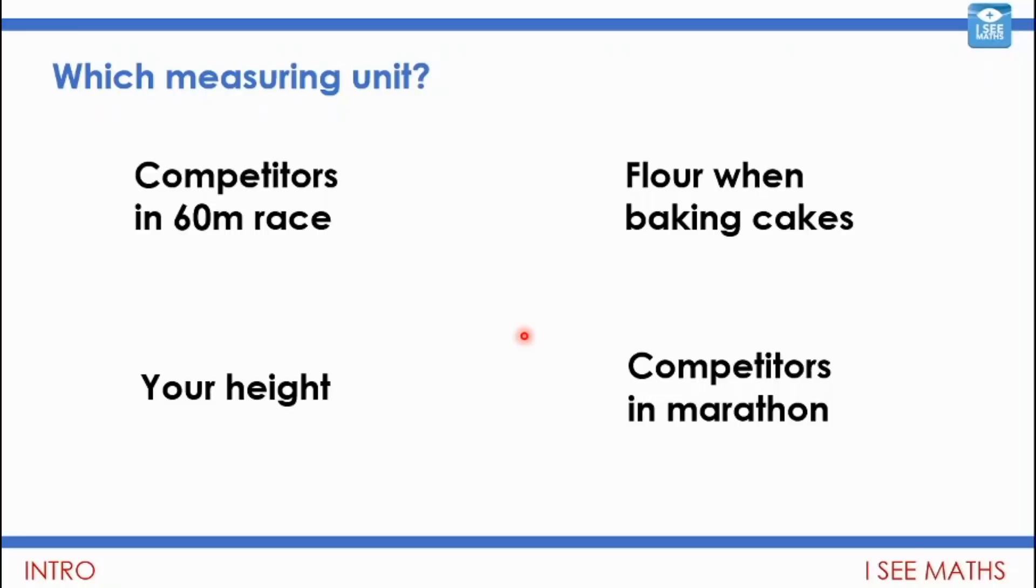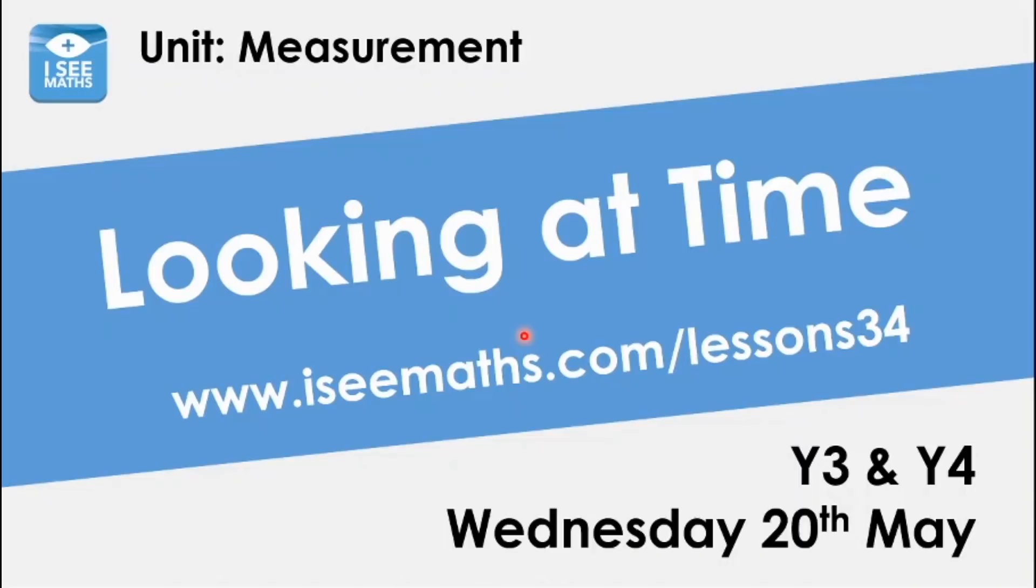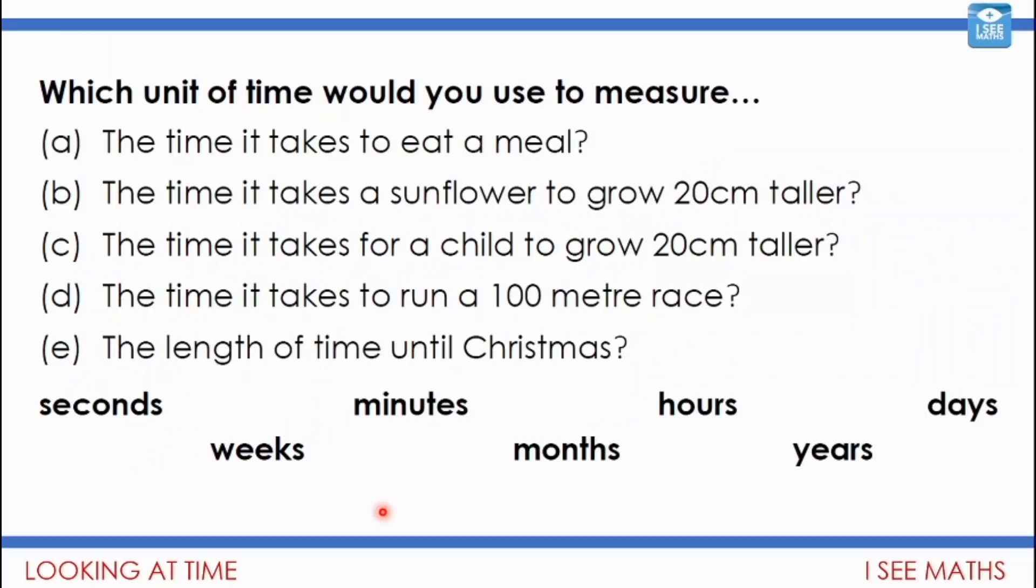Today we're looking at time. We're looking at different units of time and how time can be described and measured. There's lots of different units of time we can use: seconds are very short periods of time, weeks, minutes, months, hours, years, days. It depends how long the period of time is really which unit you'd use to measure in. Pause the video and have a think about these examples.